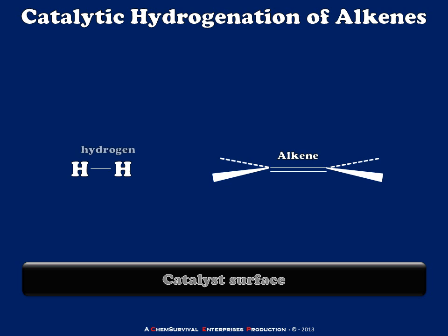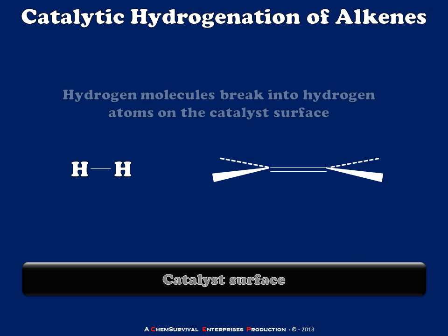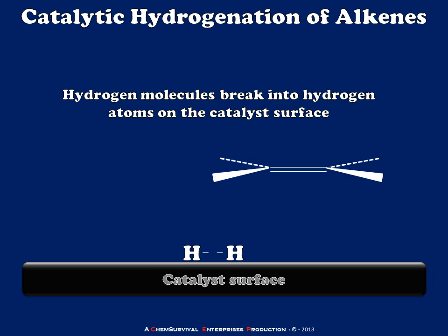We're going to take an alkene and a hydrogen molecule and react them, but the reaction takes place at the surface of this catalyst. The first step in this process is that the hydrogen molecules will break apart into neutral hydrogen atoms on the catalyst surface. What's important about this is that those hydrogen atoms are held in space on that catalyst and can't move until they have reacted with the alkene.